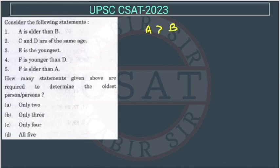C and D are of same age. E is youngest, so E will be the youngest, the last one.